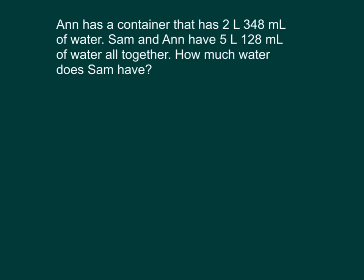Let's take a moment to read this problem together. Ann has a container that has 2 liters, 348 milliliters of water. Sam and Ann have 5 liters, 128 milliliters of water altogether. How much water does Sam have? Let's write out a focused answer. Sam has blank liters, blank milliliters of water.